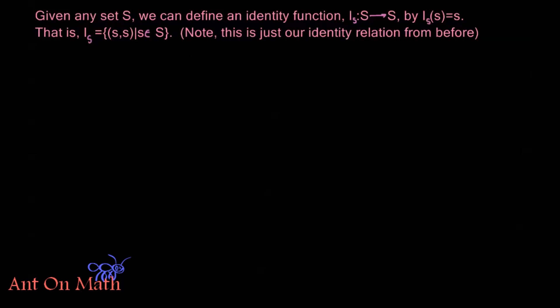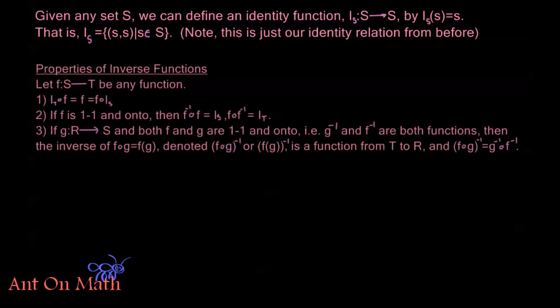Now I need that to talk about some of these properties here. So let's let F from S to T be any function. The identity function on T composed with F is equal to F, is equal to F composed with the identity function on S. So nothing special here.